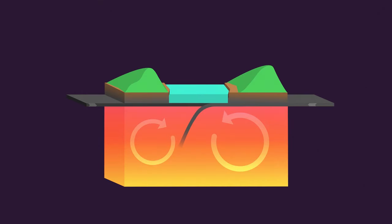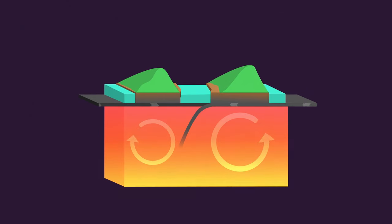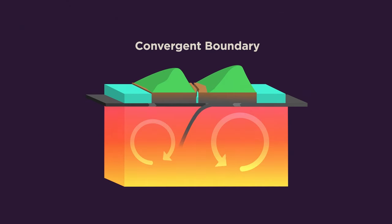If the ocean is spreading in some places, it must be being consumed in others. This is where two plates are moving towards each other, the so-called convergent boundaries.